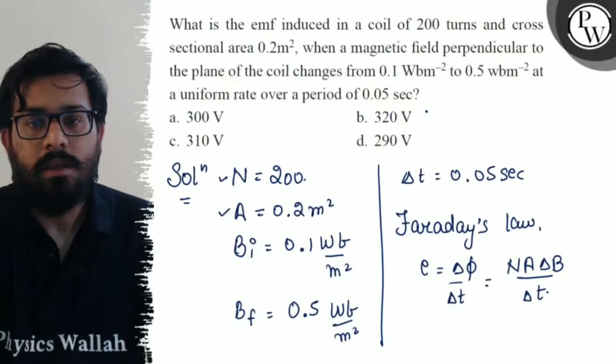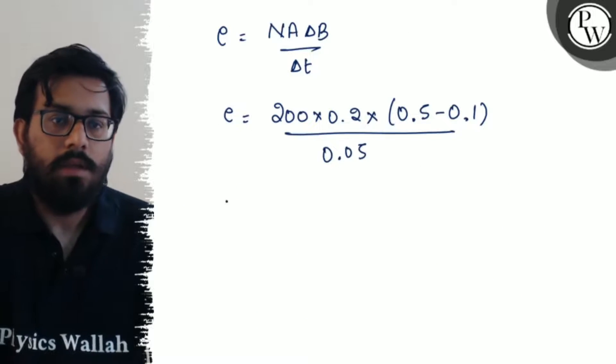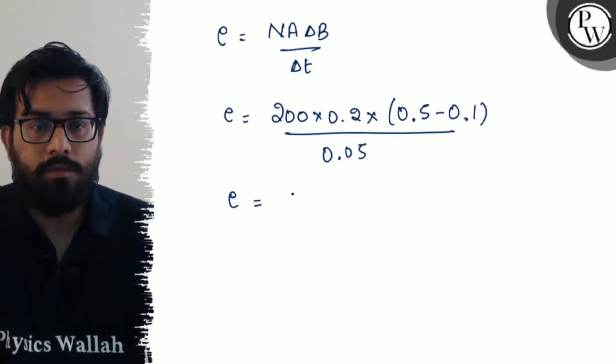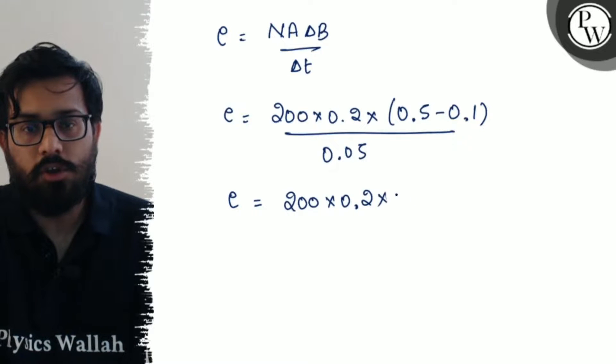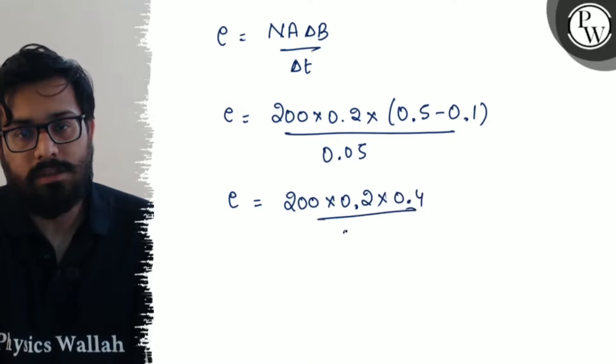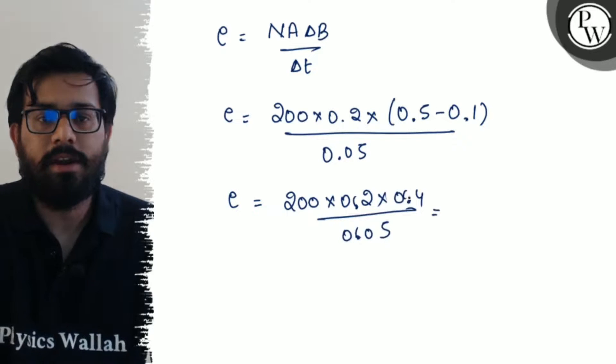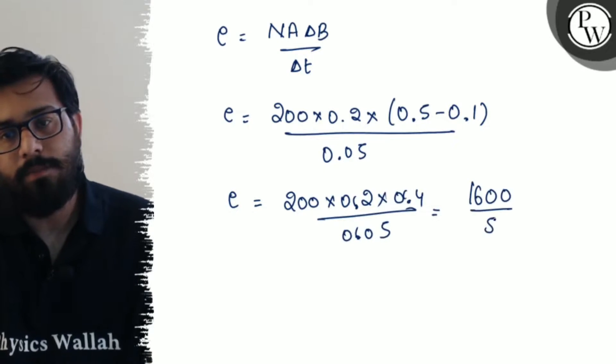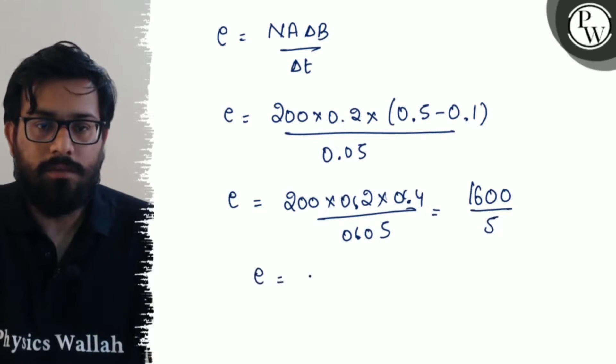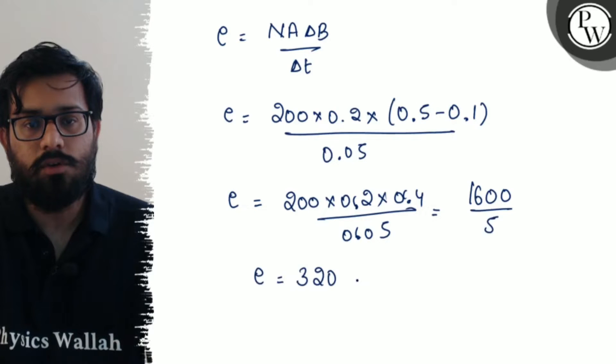And the time interval is given as 0.05 seconds. Solving it, we will get the value of 200 into 0.2 into 0.4 divided by 0.05. All that decimal part gets cancelled out and you will get the value as 1600 upon 5. So solving it further we get the value of 320 volts.